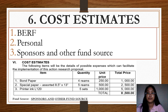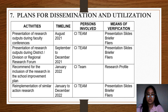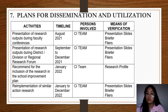Plans for dissemination and utilization includes activities, timelines, persons involved, and means of verification. This involves your plans on how to communicate the results of your study to others — internal or external stakeholders. For example, you can plan to present your research output during faculty conferences, or during district, division, or regional research forums. The timeline must be identified, as well as the persons involved — it can be the proponent or the CI team. For the means of verification, you may include presentation slides, a referral, and a plan of use. These three are required when implementing a CI project.